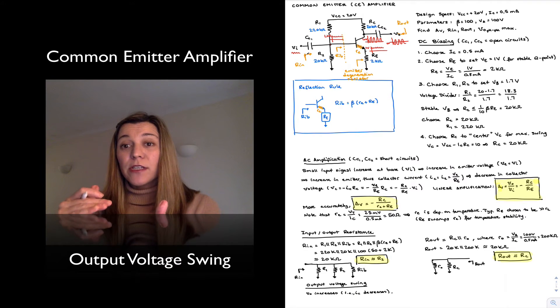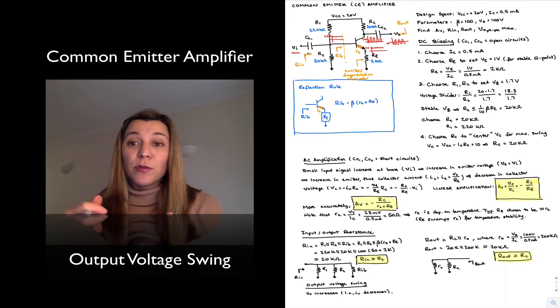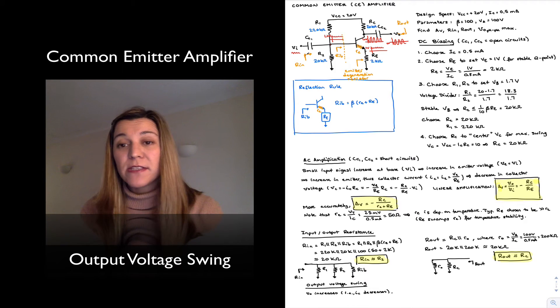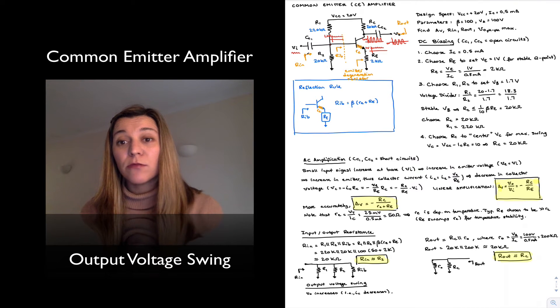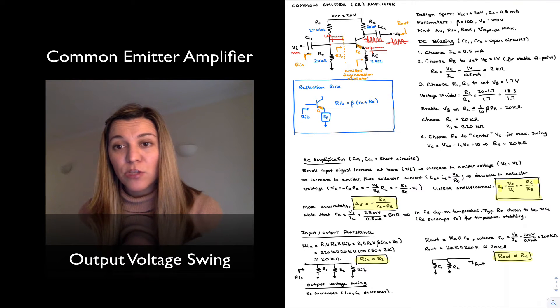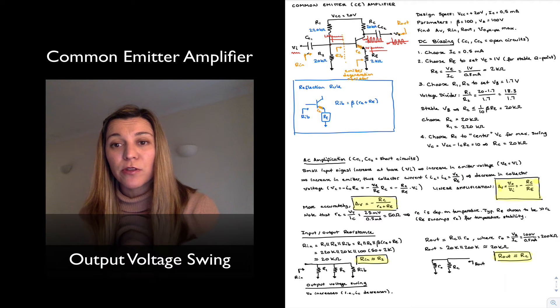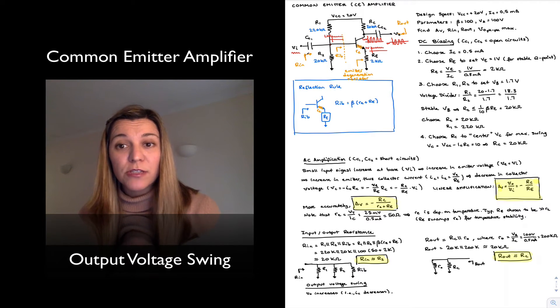Vout can increase up to the point where it reaches VCC, and at that point there is zero voltage drop across RC, which means zero current flowing through RC. If there is zero current flowing through the transistor, then the transistor is in cutoff.